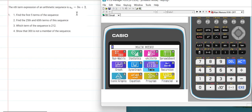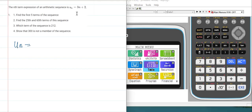Here the nth term expression is given as un = 3n + 2. Our aim is to find the first five terms.